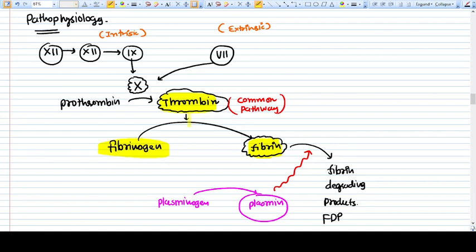To convert this process, thrombin itself must be activated. It's an activation cascade - one factor activates another. There are two pathways: intrinsic and extrinsic. In the extrinsic pathway, factor VII and tissue factor will be there. In the intrinsic pathway, factors XII, XI, and IX will be there. All these pathways converge at the common pathway and activate thrombin. Activated thrombin converts fibrinogen into fibrin.